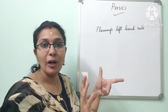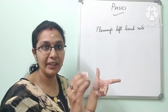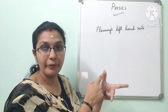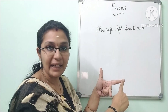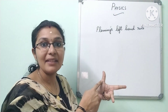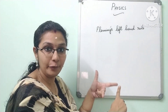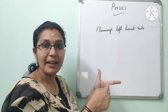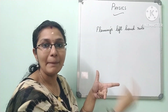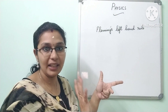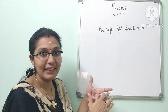For easy memorizing, here is a simple trick. Consider them as father, mother, and child. Father represents force — F and F. Mother represents magnetic field, and child represents current. So F for force, M for magnetic field, and C for current. These three fingers are representing force, magnetic field, and current.